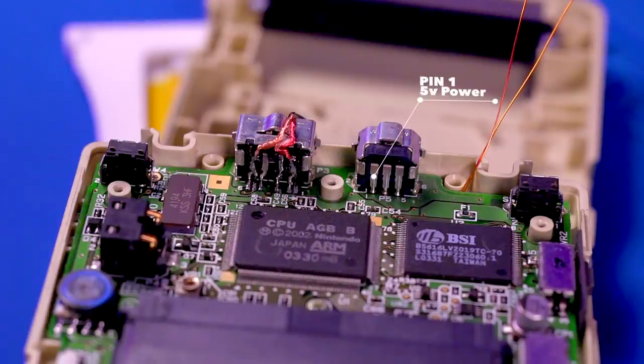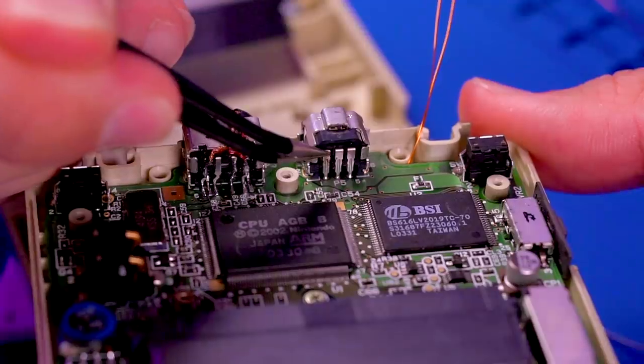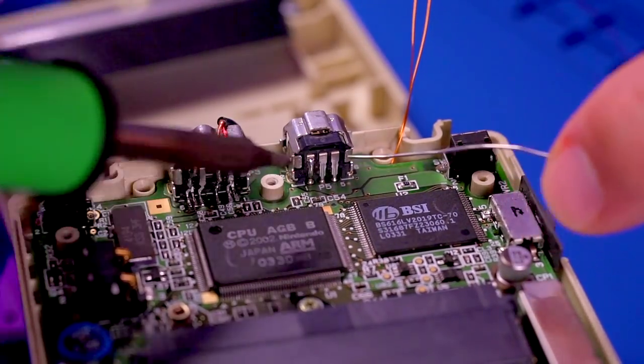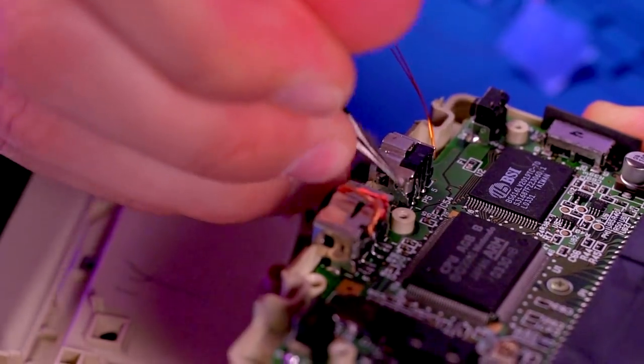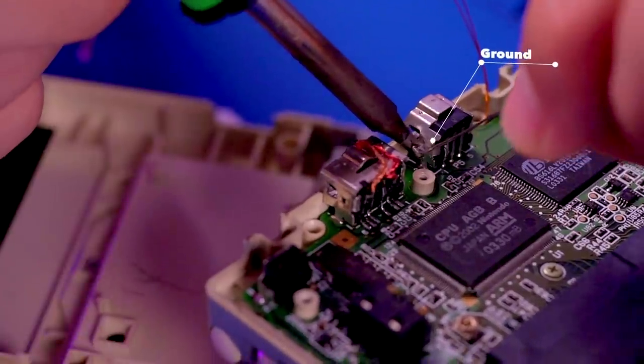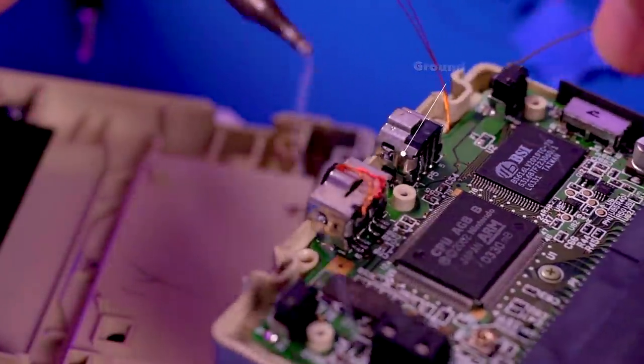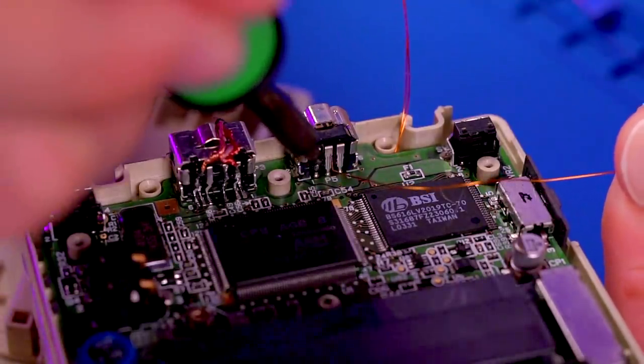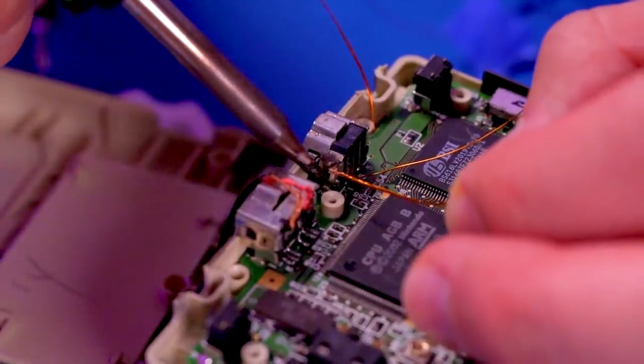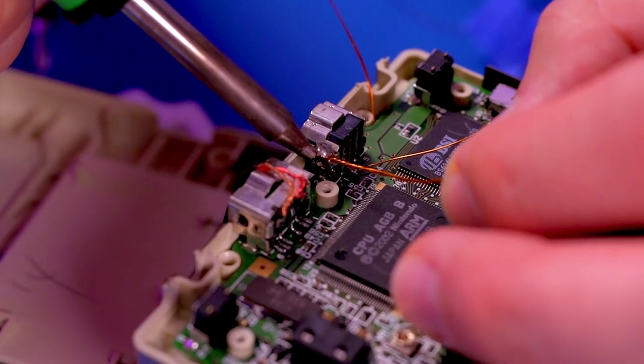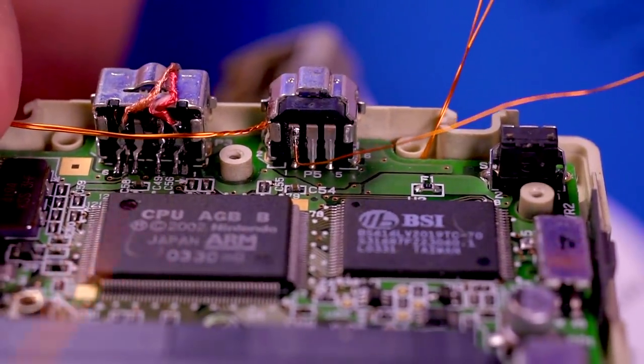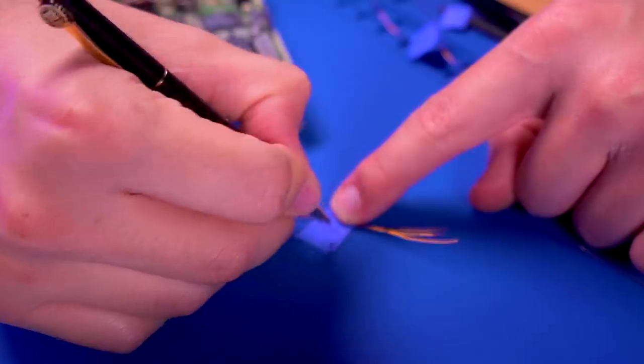Now we're going to tap 5 volts of power from pin 1 of the link port. To aid in wetting the solder, gently scratch the pin surface. Then pre-tin it with some solder. Do the same to the ground shielding of the link port, then add some solder. Go ahead and solder one wire to pin 1. And then solder three wires to the ground shielding. I twisted the wires together to make this step easier. This is what pin 1 should look like. And here are the three ground wires. Go ahead and label these wires as well.